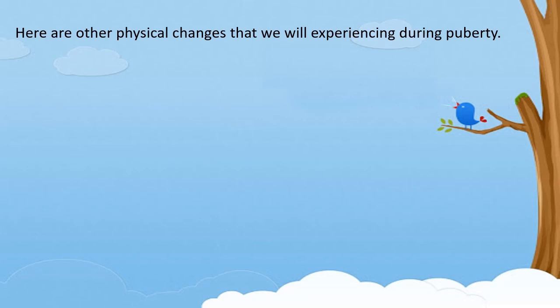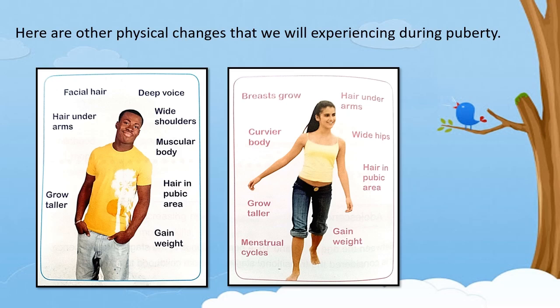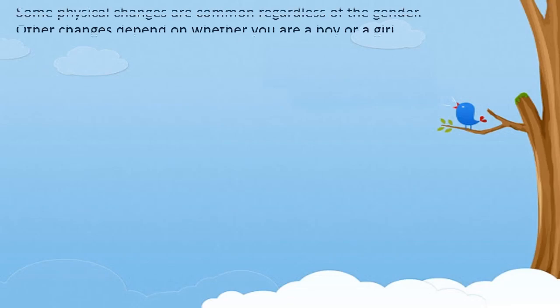Here are other physical changes experienced during puberty. For boys: facial hair, hair on arms, grow taller, deep voice, wide shoulders, muscular body, hair in pubic area, and weight gain. For girls: breasts grow, curvier body, grow taller, menstrual cycles, hair under arms, wide hips, hair in pubic area, and weight gain.